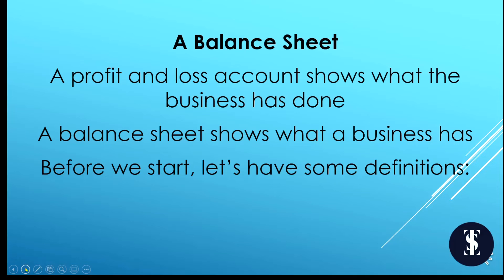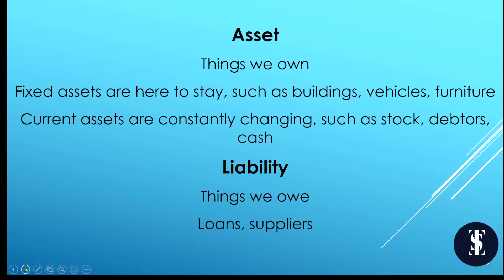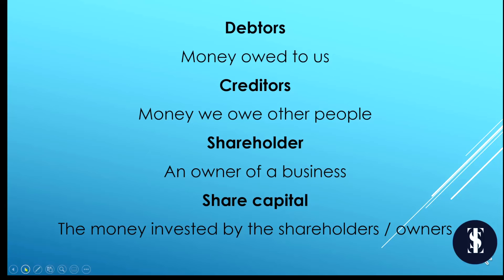Balance sheet: a profit and loss account shows what the business has done; a balance sheet shows what the business has. Assets are things we own — fixed assets such as buildings, vehicles, furniture, and computers, and current assets which change all the time, such as stock, debtors, and cash. Liabilities are things we owe, including loans and money owed to suppliers. Debtors is money owed to us; creditors is money we owe to others.